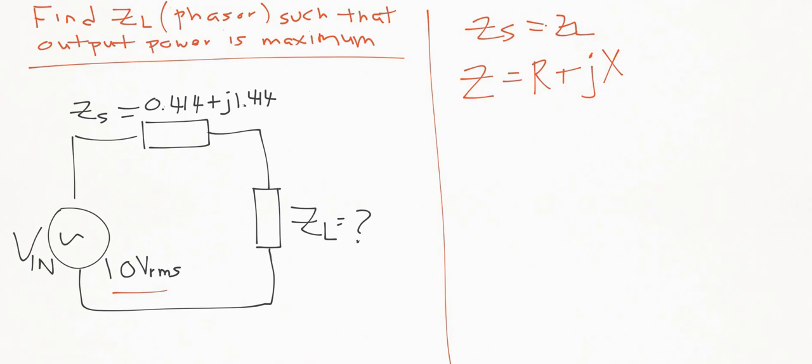And so from this equation here, we know what ZL is. We know what the resistive portion of it is and what the reactive portion of it is. And so we get 0.414 plus J 1.414 ohms. And now we've got to put that into polar coordinates, into a phasor here.